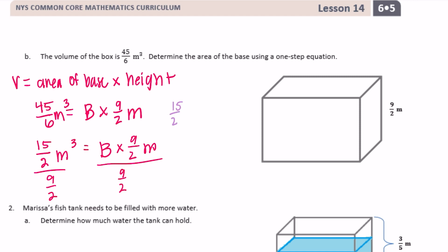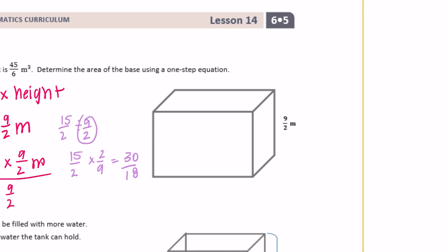15/2 divided by 9/2: flip and multiply to get 30/18. 30/18 equals 1 and 12/18. Reduce 12/18 by dividing both by 6 to get 2/3. So the area of the base equals 1 and 2/3 meters squared.